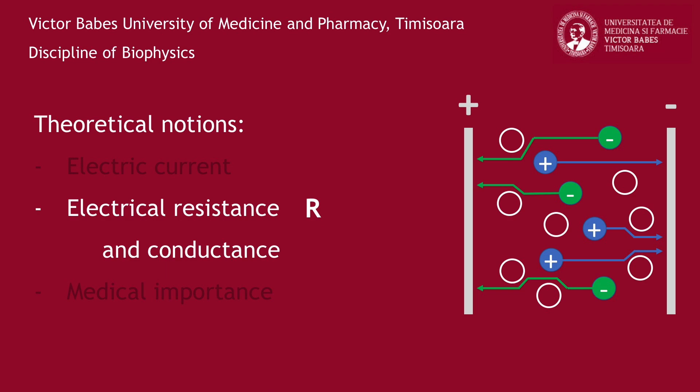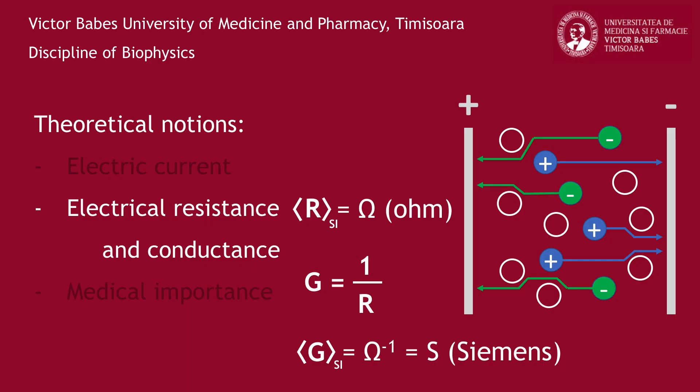Electrical resistance is measured in the international system of units in ohms. Its reciprocal quantity, the electrical conductance, characterizes the ease of electrical charge's movement through a medium. The electrical conductance of a medium depends on its composition and on temperature, and its values are measured in the international system of units in Siemens.